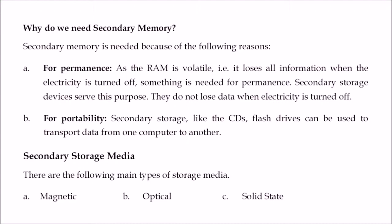There are two reasons we need secondary memory: first, permanency — RAM is volatile and loses data when electricity is turned off, but secondary storage retains data. Second, portability — you cannot carry RAM everywhere; for moving data between computers you need portable secondary storage like CDs, DVDs, Blu-rays, and flash drives. Secondary storage media can be magnetic, optical, or solid state.